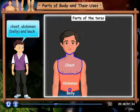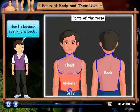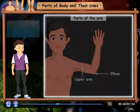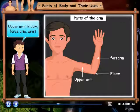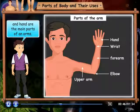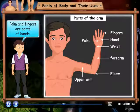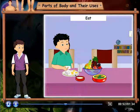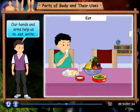belly and back. Forearm, wrist and hand are the main parts of an arm. Palm and fingers are parts of hands.